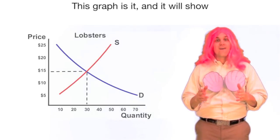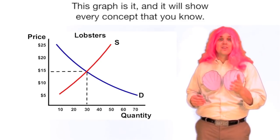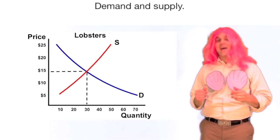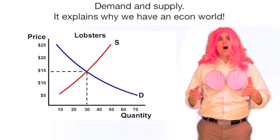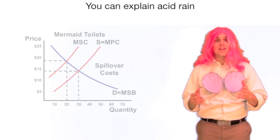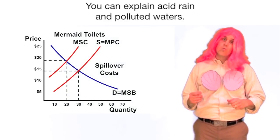This graph is it and it will show every concept that you know. Demand and supply, it explains why we have an econ world. You can explain acid rain and polluted waters.